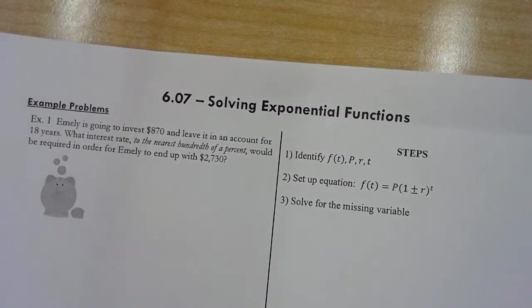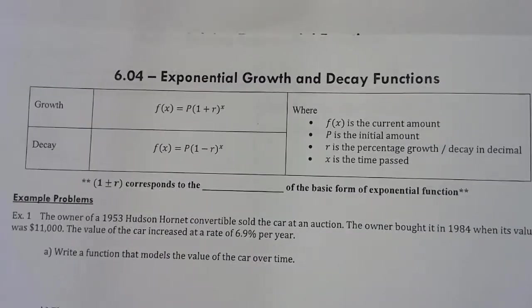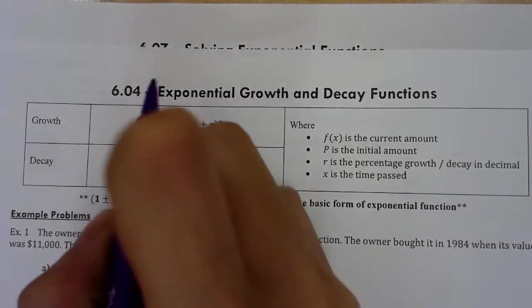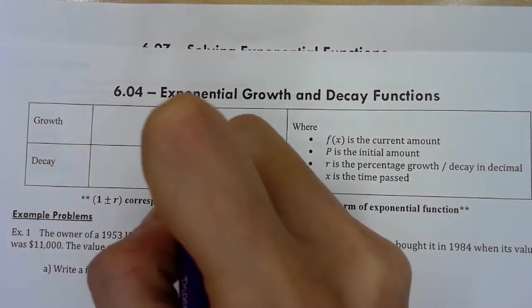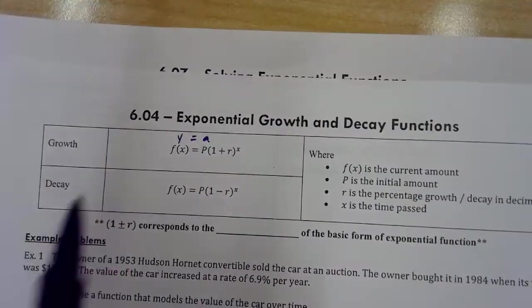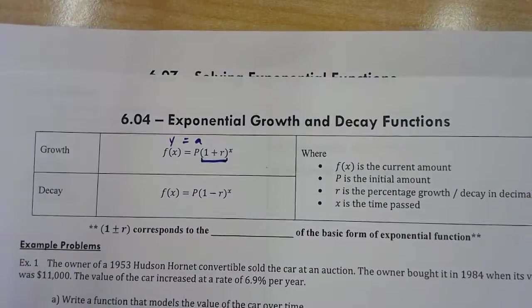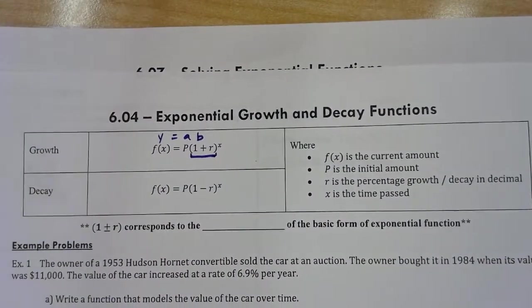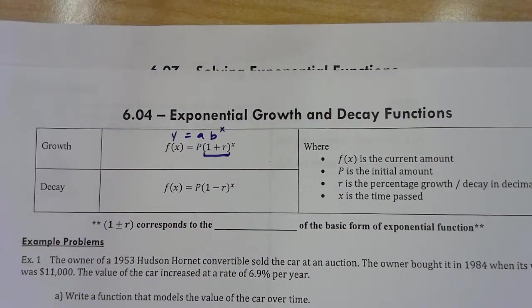Before we get started on this lesson, take a look at 6.04. We have defined that f(x) is the same thing as y, P is the initial value, which is the same thing as the basic form of a. And of course, that 1 plus r used to be the base, or if it's a decay function, it's 1 minus r, and raised to input variable x, which is the exponent.